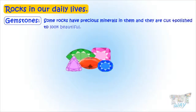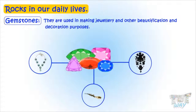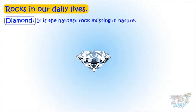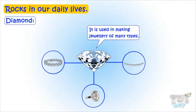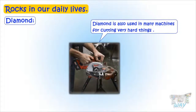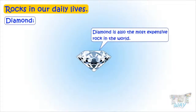Some rocks have precious minerals in them called gemstones. They are cut and polished to look beautiful and shiny, and are used in making jewelry and for beautification and decoration purposes. Diamond is the hardest substance known in the world and is used in making jewelry of many kinds. Diamond is also used in many machines for cutting very hard things, and it is also the most expensive rock in the world.